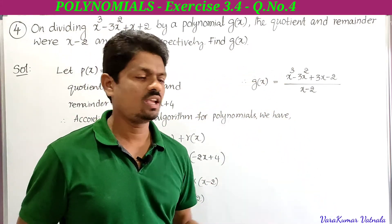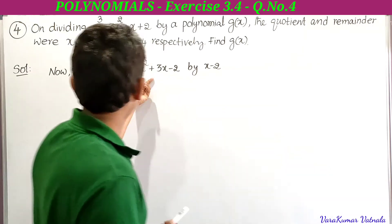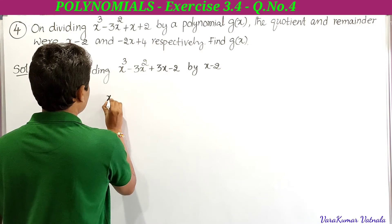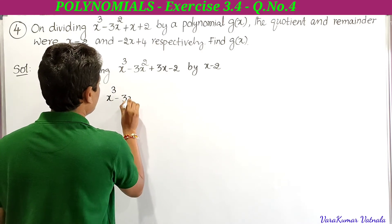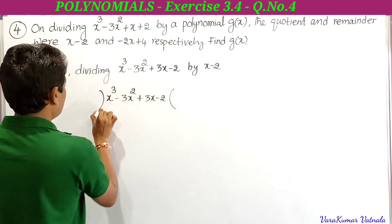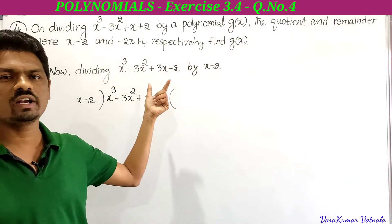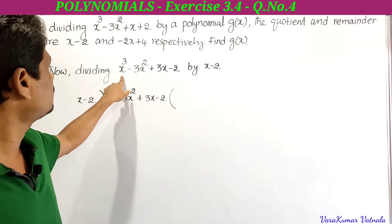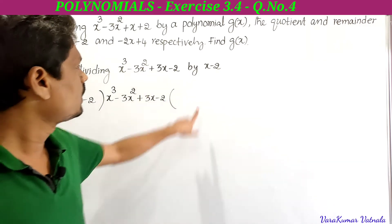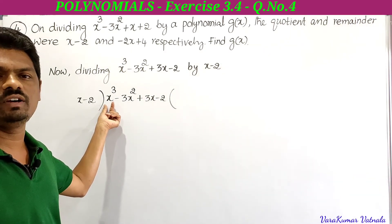Now we divide x³ - 3x² + 3x - 2 by x - 2. The dividend is x³ - 3x² + 3x - 2 and the divisor is x - 2. Before dividing, we check that both are in standard form with powers in decreasing order: 3, 2, 1, 0 — yes, they are.